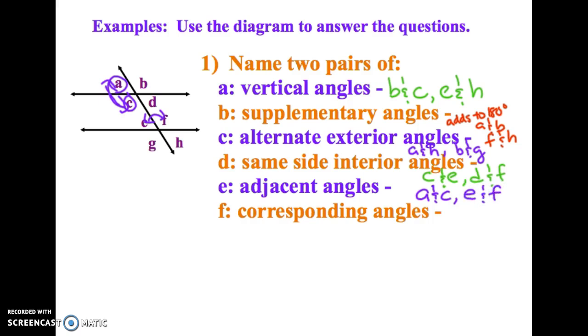And then lastly, corresponding angles. So in the same relative position. So you may have picked, for example, A and E. You may have also picked B and F.